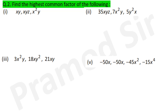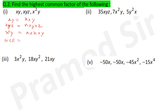Question 2: find the highest common factor — here there are 3 terms. xy = x×y, xyz = x×y×z, and x²y = x×x×y. What is matching: only x one time. So HCF = x.